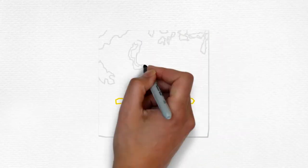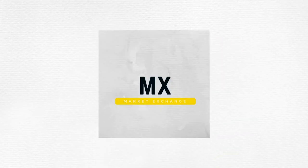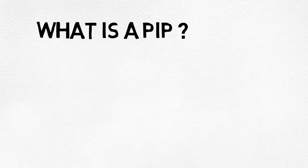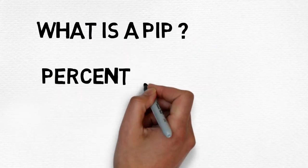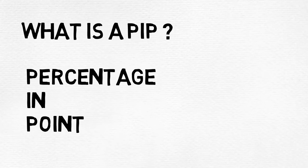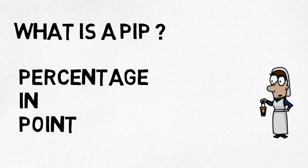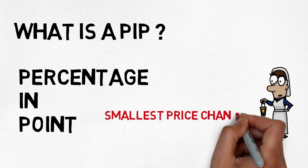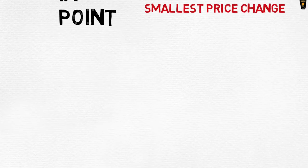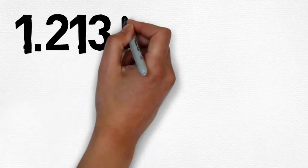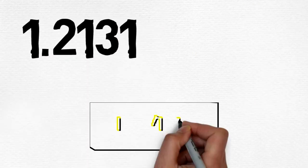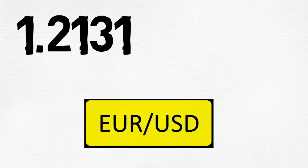Hey guys, today we at Market Exchange will discuss what is a PIP and how you can calculate it. A PIP stands for percentage in point — that is the smallest price change that an exchange rate can make. An increase or decrease in PIPs represents a profit or a loss in a forex trade.